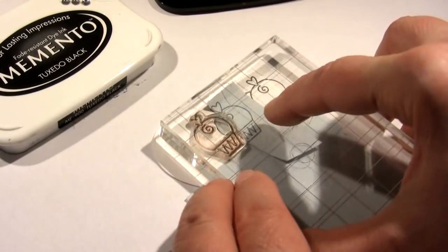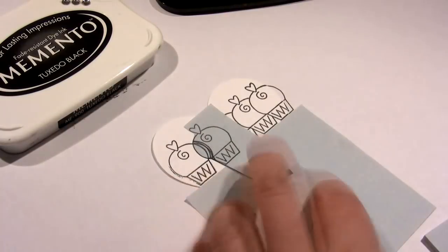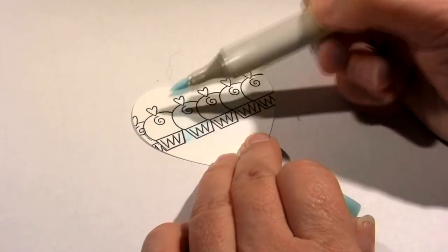I could die-cut the heart later, but this allows me to just color the sections that I want. I'm using a simple masking technique with post-it notes to make the truffles look like they're one behind the other.